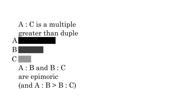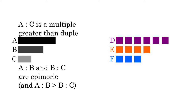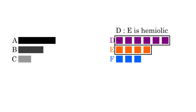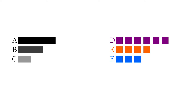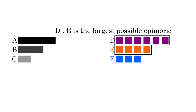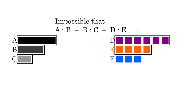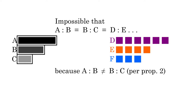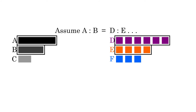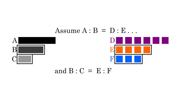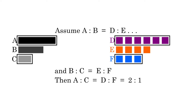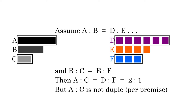For the sake of convenience, we'll say that a to b is the larger of the two intervals, although it's strictly irrelevant which interval is larger. Now let there be three other numbers d, e, and f. D to e will be hemiolic, e to f will be epitritic, and therefore d to f will be duple. We need to compare a to b and b to c to their counterparts on the right-hand side. Since the hemiolic interval is the largest possible epimoric, it is impossible that a to b or b to c are larger than d to e. It's also impossible that a to b and b to c are both equal to d to e, since we have already established that they are not equal to each other. Let's assume that a to b is equal to d to e, and b to c is equal to e to f. If this were the case, then a to c would have to be equal to d to f, which is duple, but we already know that a to c is not duple, so this case is also not possible.